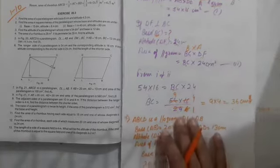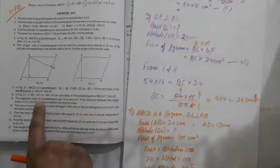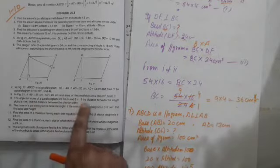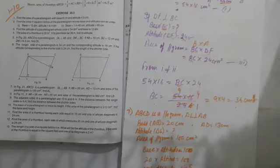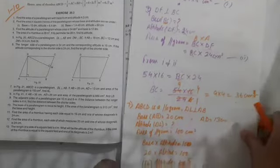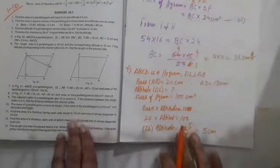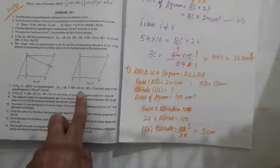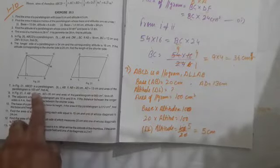Sum number 6 similarly solve hua. Aapke paas sum number 9 bhi hai — adjacent sides: ek longer side 10 meter hai aur shorter side 8 hai, distance between the longer sides is 4. Yeh aap khud solve karoge, similarly jaise maine abhi 6 kiya. Ab dekho next sum — sum number 7. In figure ABCD ek parallelogram hai, DL perpendicular hai AB, AB = 20 cm, AD = 13 cm, aur area of the parallelogram = 100 cm².